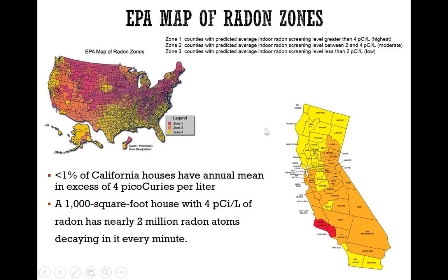This map shows different radon exposure zones within the US and a zoomed-in view of California: high exposure in red, moderate in orange, and low in yellow. Most of California appears to have moderate to low exposure, except Santa Barbara County. In the US overall, high radon exposure in the soil is concentrated mostly in the Midwest.